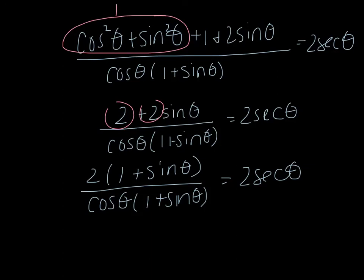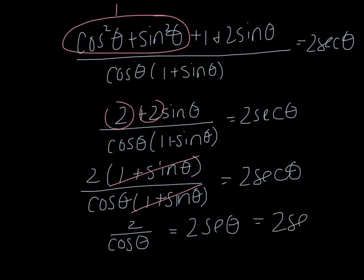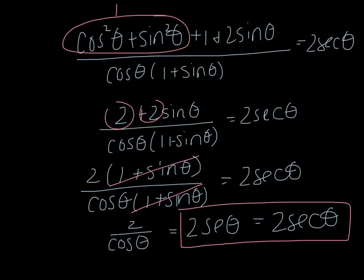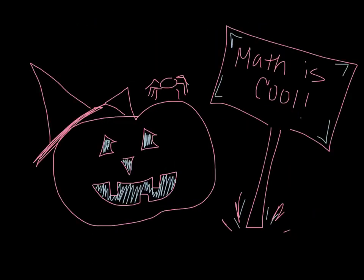The matching (1 plus sine theta) terms on top and bottom cancel, leaving 2 over cosine theta, which equals 2 secant theta. So 2 secant theta equals 2 secant theta — I've brought the left-hand side all the way down to match the right side, so that equation is verified. These problems take a lot of practice, so we'll do more on Monday. Please make sure you do those four homework problems assigned on Friday.